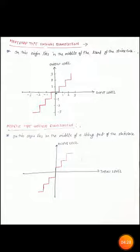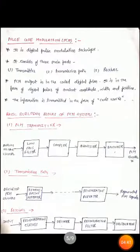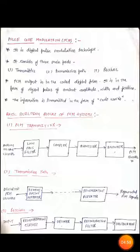These are the differences between mid-rise type and mid-tread type uniform quantization. After discussing quantization, we will now discuss Pulse Code Modulation (PCM). PCM is a digital pulse modulation technique — but it is not strictly a modulation technique, because it is basically a converter that converts a continuous time signal into a binary coded form, that is, binary 1 or 0. These binary symbols are represented by pulses of constant amplitude, constant width, and constant position.